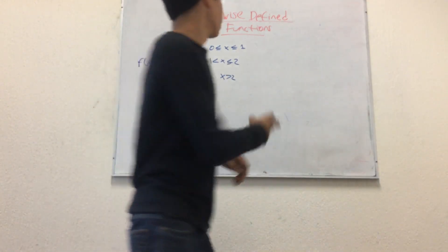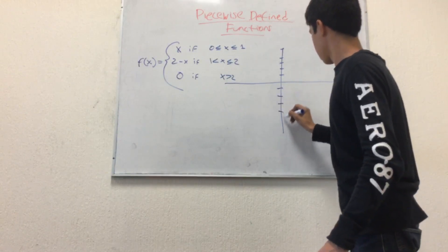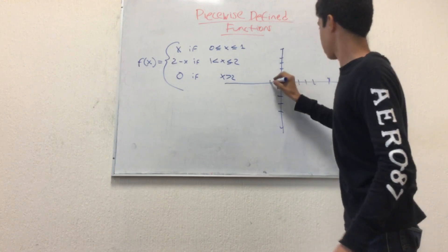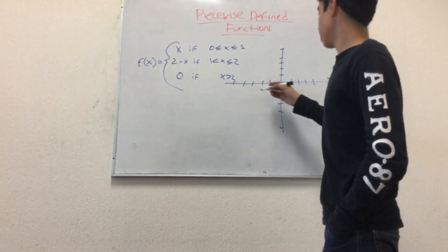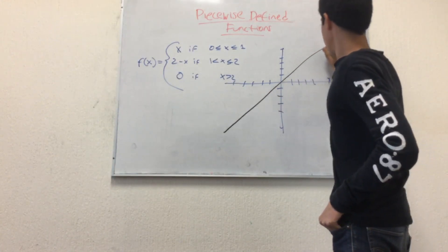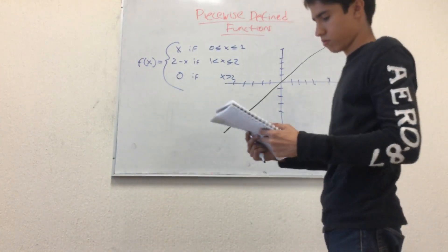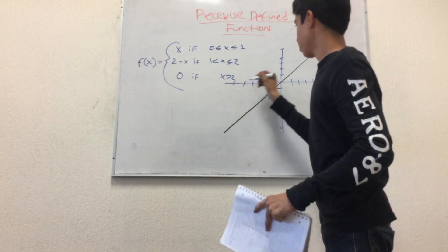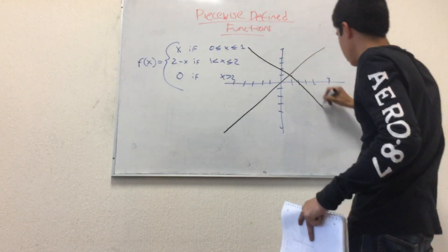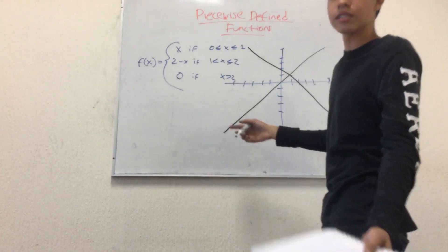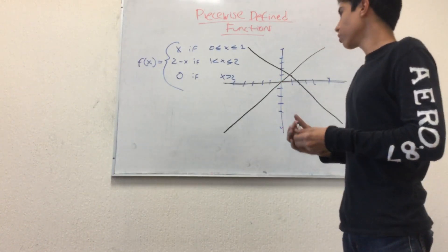For this next example, we also draw our Cartesian plane and graph the three pieces. f of x equals x is a 45-degree line passing through the origin. Then f of x equals 2 minus x goes like this. And the next one is f of x equals 0. You can go ahead and do the procedure described to get the domain and the order pairs.